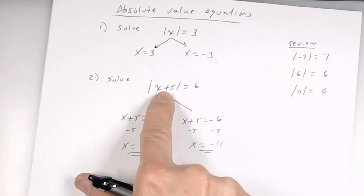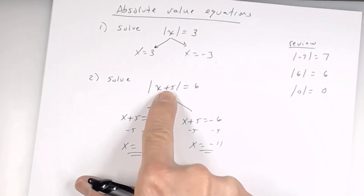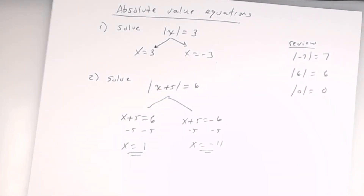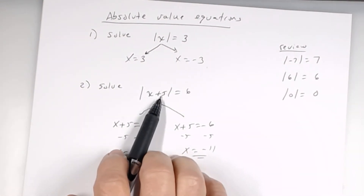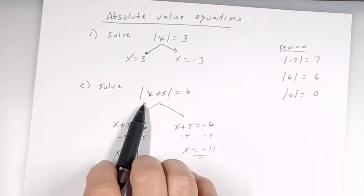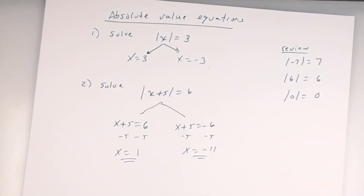Let's verify anyway. For x equals 1: what's 1 plus 5? That's 6. What's the absolute value of 6? It's 6 — remember, the absolute value of a number is always positive or 0, so don't say the absolute value of 6 is negative 6. For x equals negative 11: what's negative 11 plus 5? Negative 6. What's the absolute value of negative 6? Positive 6. Both solutions check out.